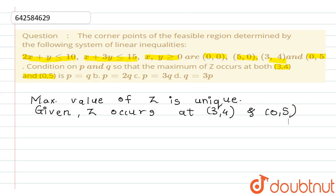So as the value of Z is unique, from that we can write that value of Z at point (3,4) is equal to value of Z at point (0,5). Yes, so we can write in this way.